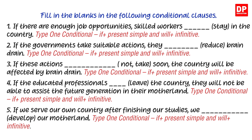'If there are enough job opportunities, skilled workers will stay in the country.' 'If the governments take suitable actions, they will reduce brain drain.' 'If these actions don't take place soon, the country will be affected by brain drain.' 'If the educated professionals leave the country, they will not be able to assist the future generation in their motherland.' 'If we serve our own country after finishing our studies, we will develop our motherland.' As you can see, the type 1 conditional has been used for all these sentences.